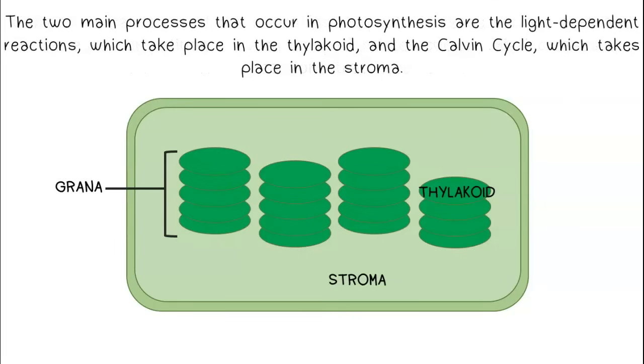The two main processes that occur in photosynthesis are the light-dependent reactions, which take place in the thylakoid, and the Calvin cycle, which takes place in the stroma.